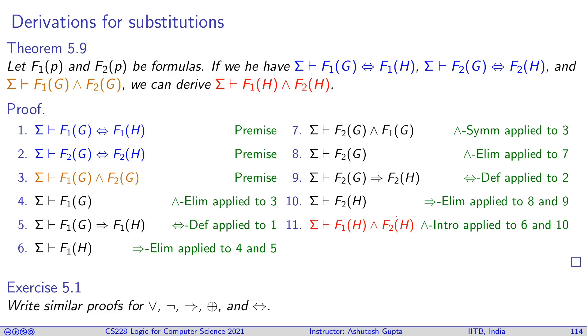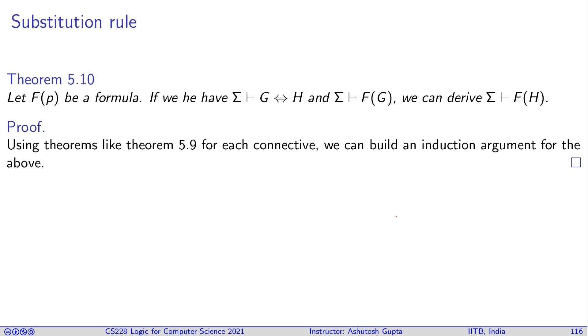Knowing this allows us to prove something like this. If we have this kind of proof for each logical connective then we can write down this theorem. The theorem says that if we have equivalence between two formulas and we know F(G) then we can derive F(H).